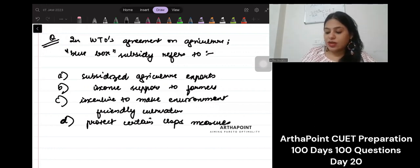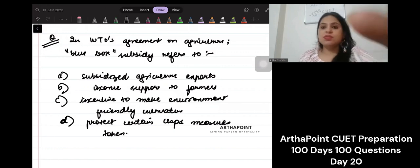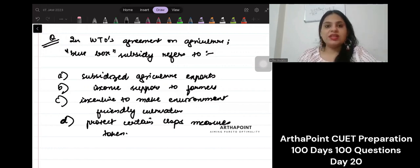So you have to tell me that in WTO's agreement on agriculture, what does blue box represent? Okay, thank you. We will meet in the next class for this. We will meet in the next class.